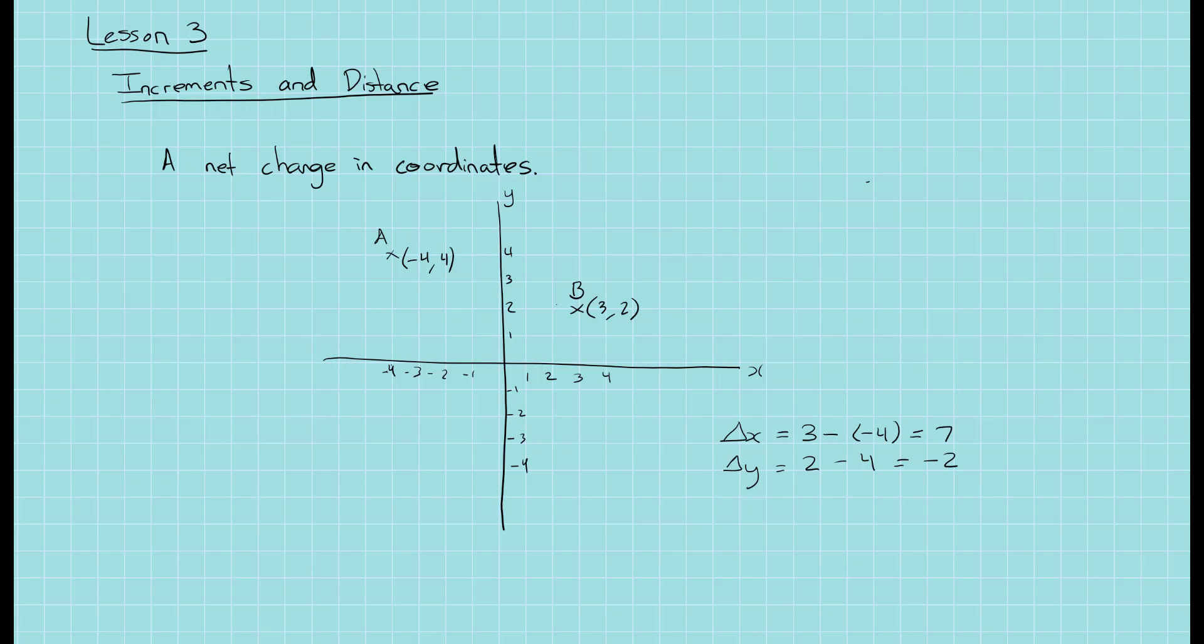So delta x and delta y would be the increments if we're talking about traveling from the point A to B. These increments are signed, but what about the distance between A to B, the straight line distance? How do we calculate that?